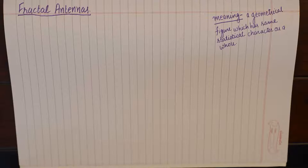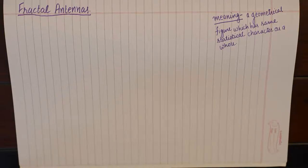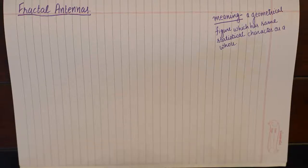Fractal antennas are designed to obtain radiation patterns and input impedances similar to longer antennas, while keeping the size of the antenna really very small. To understand the construction of fractal antennas and how they influence enhanced performance over traditional antennas, we must understand the meaning of fractal first.